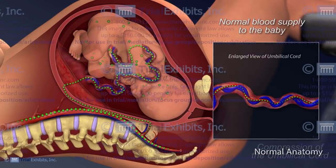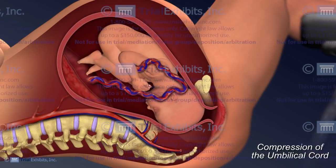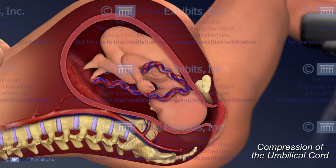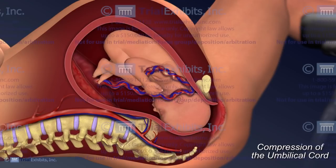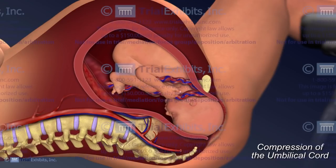Next, we showed how the umbilical cord can become entrapped during labor and how the compression of the cord can obstruct blood flow to the baby.